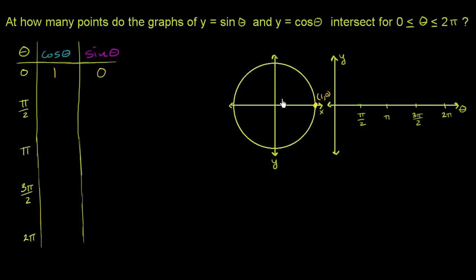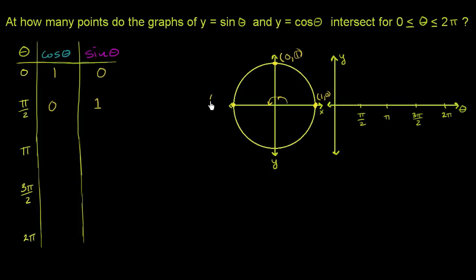At theta equals π/2, we're at the point (0, 1) on the unit circle. So cosine of θ is 0 and sine of θ is 1. At theta equals π, we're at (−1, 0), so cosine of θ is −1 and sine of θ is 0.